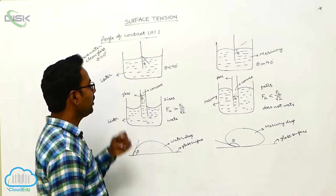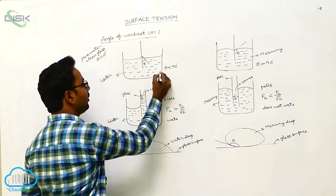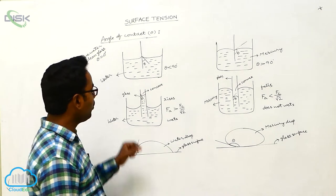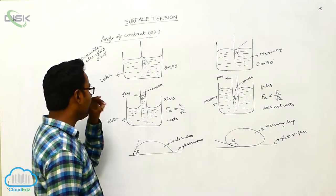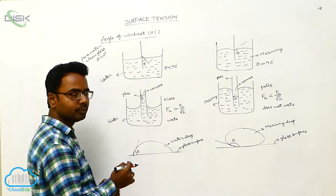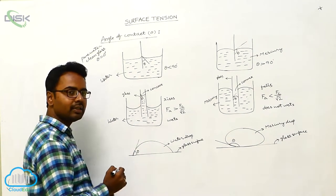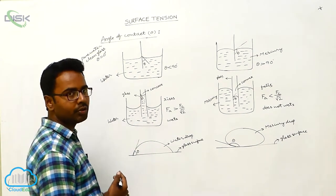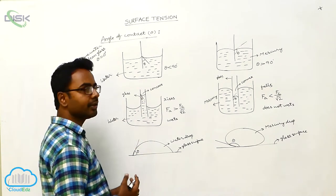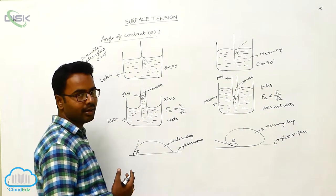Normally, if the water is not pure or the glass is not clean, then the angle of contact is less than 90 degrees. In such a liquid — water — if you place a capillary tube, the liquid level rises in the capillary tube. This rising of the liquid level is due to the angle of contact being less than 90 degrees for glass and water.